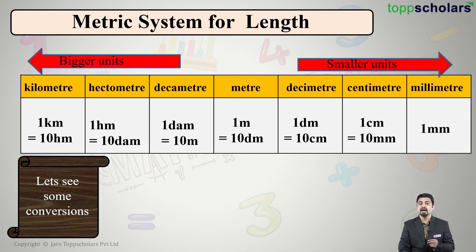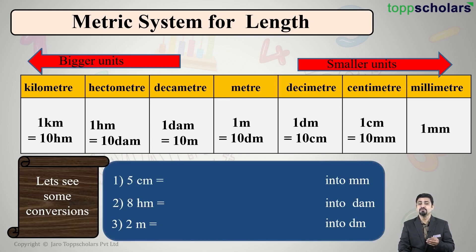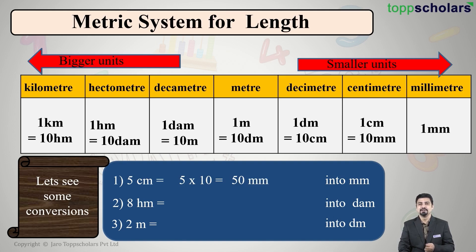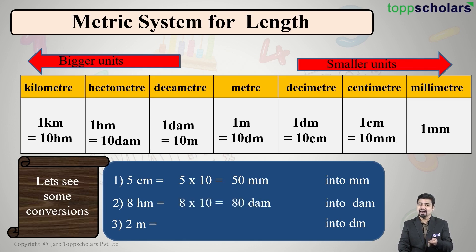Let us now see some conversions. First: 5 centimeters into millimeters. From the table, 1 centimeter is 10 millimeters, so 5 centimeters equals 5 × 10 = 50 millimeters. Next: 8 hectometers into decimeters. From the table, 1 hectometer equals 10 decameters, so 8 hectometers equals 8 × 10 = 80 decameters.